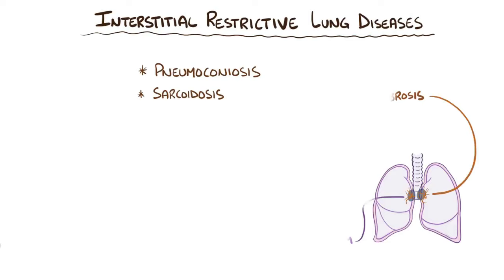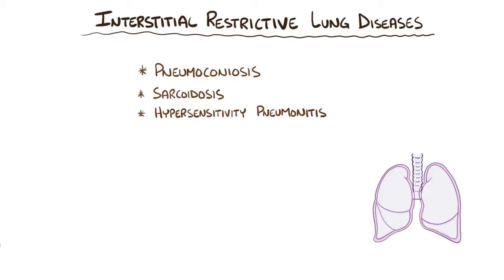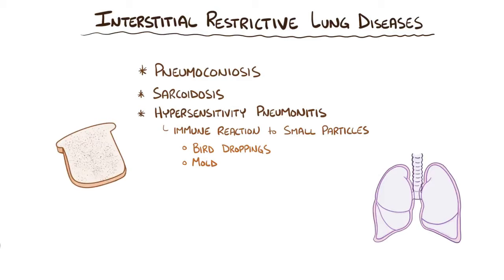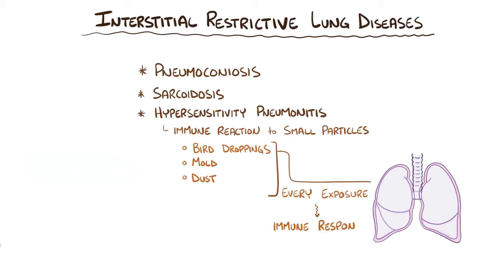Another type of restrictive lung disease is hypersensitivity pneumonitis, which is caused by an immune reaction to various small particles — things like bird droppings, mold, or dust. Every time there's an exposure, the immune cells release cytokines and inflammatory mediators which damage the lung and cause a bit more fibrosis. Over time with chronic exposure to these particles and chronic inflammation, the entire lung can become fibrotic.